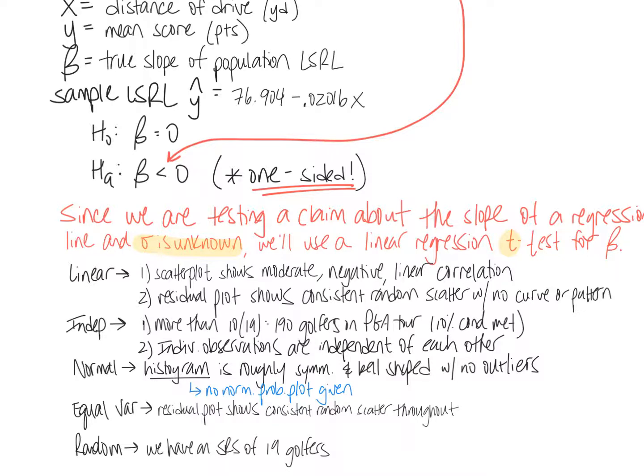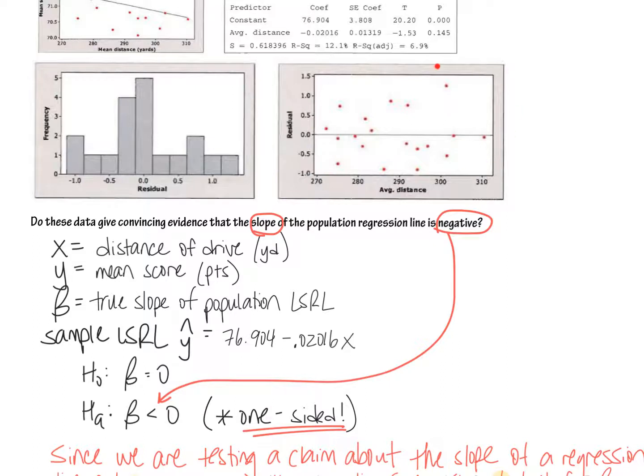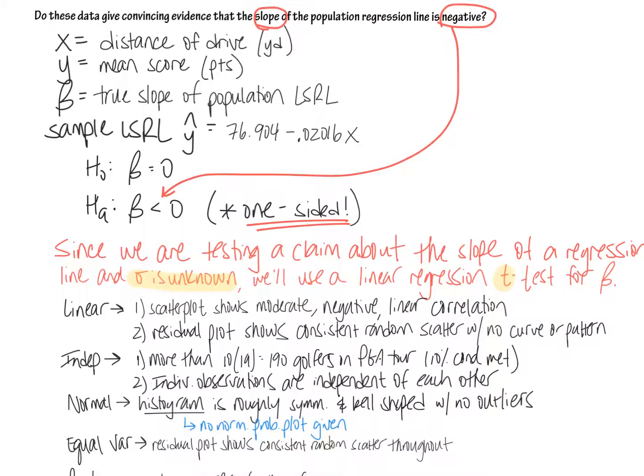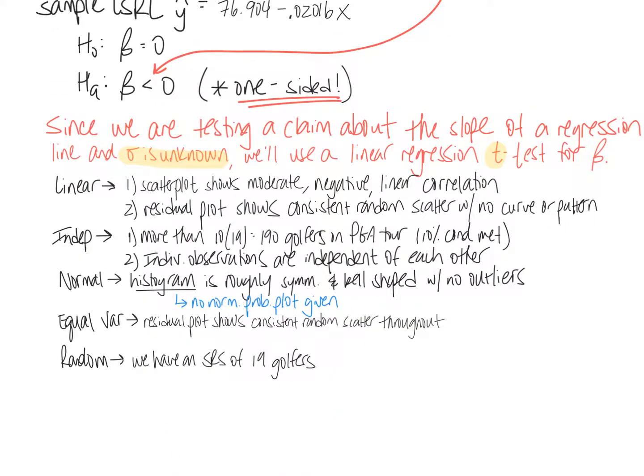The equal variance clause. Again, you're looking at the residual plot. It shows a consistent random scatter throughout. You use that two different times in your condition check for two different things. You're trying to make sure that your residuals aren't really small at the beginning and then get really big, or vice versa. That would indicate that your predictability is more or less accurate at certain spots on the LSRL, and that's not what you want. The last thing is the random clause, and again, that's the same as what we've been doing all semester. Don't just say random check. Say what it is that's random. We have an SRS of 19 golfers.